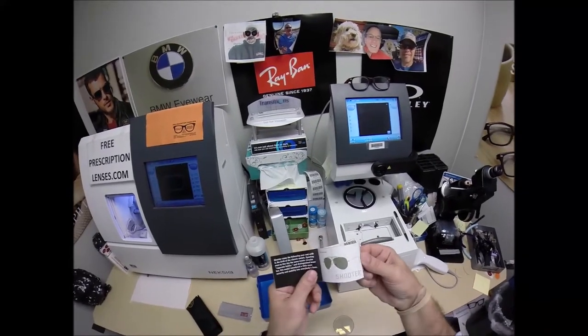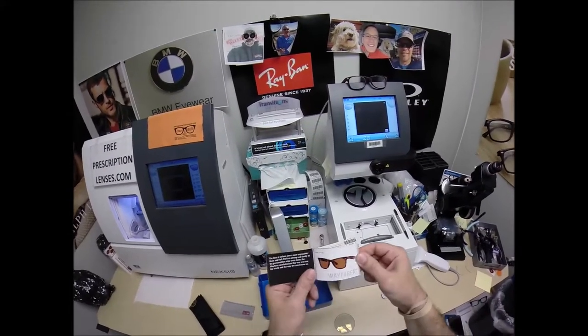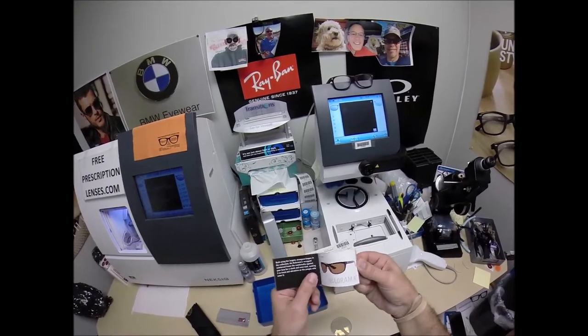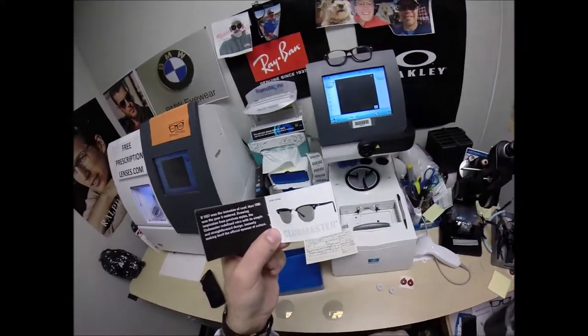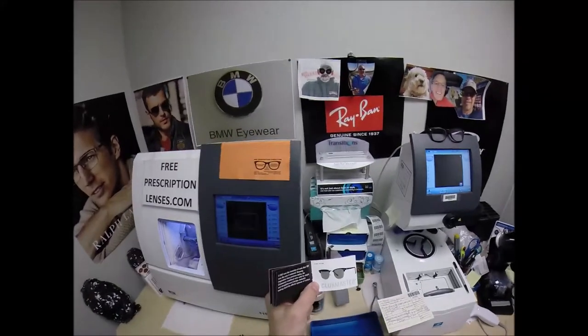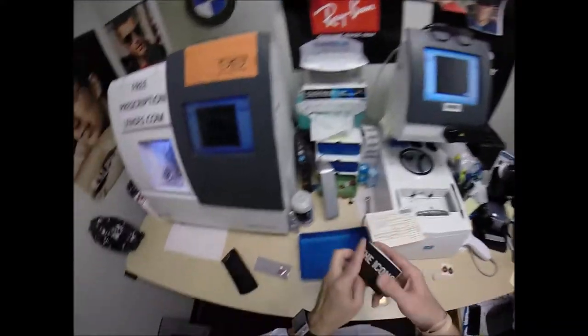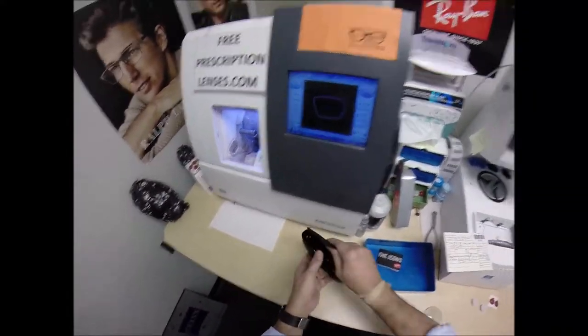Your Ray-Ban cleaning cloth with a booklet for the icons. Somewhere in here your frame: Aviator, the shooter, the outdoorsman, the Wayfarer, caravan, Olympian, Balorama, Clubmaster. There is your frame that exact color. So of course it's got a few more. The Predator, the G15 lenses, all that other stuff. You're going to get all of that.